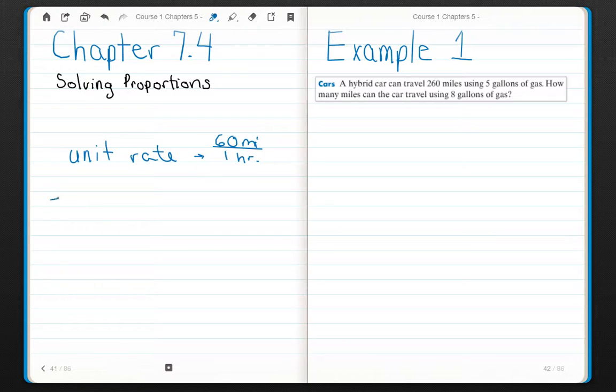We can also find equivalent ratios. It's hard to spell and talk at the same time sometimes. I can find equivalent ratios, such as two-fourths and one-half. Two-fourths and one-half are equivalent. I can also solve proportions by using the cross-products method.